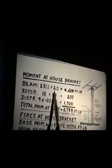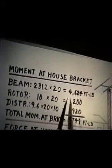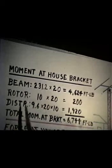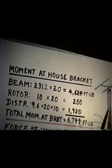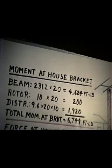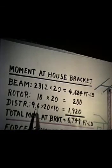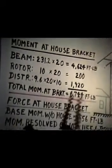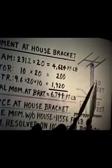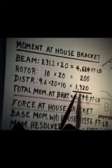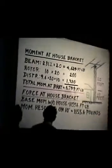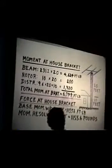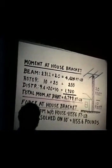The beam, now calculating for a 20-foot moment arm, gives us 4,624 foot-pounds. The rotor: 10 times 20, or 200 foot-pounds. The distributive load of the coaxial line, the tower, and the rotor cable combined is 9.6 pounds per foot. 9.6 times 20 feet times 10 feet — because it's a distributed load, it acts as a concentrated load at the center — gives us 1,920 foot-pounds. The total moment at the bracket is 6,744 foot-pounds. That's still larger than the allowable moment of restraint on the 25G tower, which is 5,130.